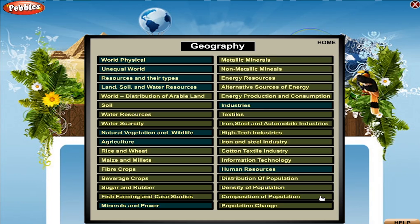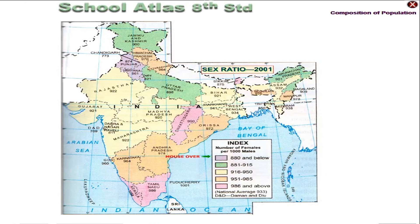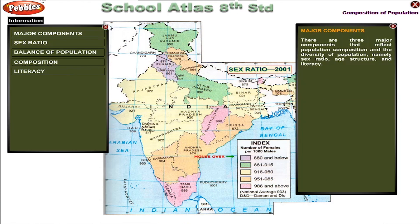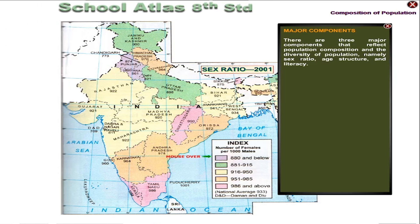Composition of Population. There are three major components that reflect population composition and the diversity of population, namely sex ratio, age structure, and literacy.